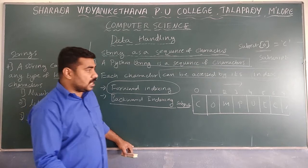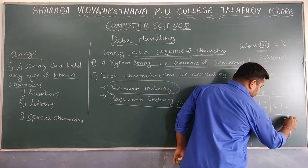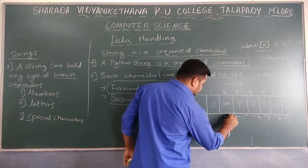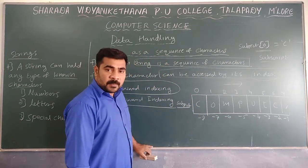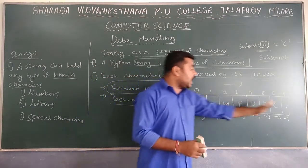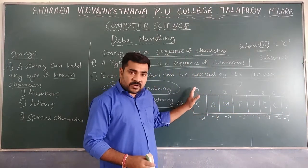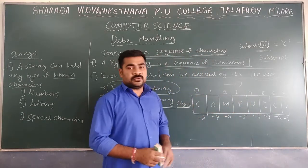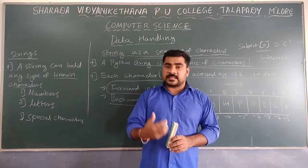Backward indexing starts from the last character by putting the value minus 1, minus 2, minus 3, minus 4, minus 5, minus 6, minus 7, and minus 8. Whenever you provide minus values it starts from the last character — that is backward indexing. Positive numbers means forward indexing. These are the two main types of indexing available in Python.